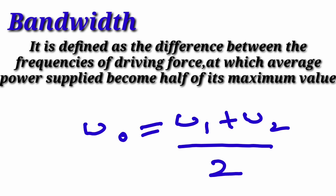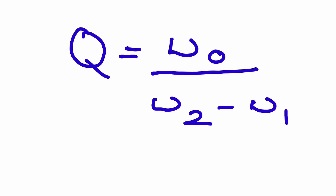Bandwidth is defined as the difference between the frequencies ω₂ − ω₁ at which average power supplied becomes half of its maximum value. There is also an expression showing the relationship between resonant frequency ω₀ and bandwidth frequencies ω₁ and ω₂ — useful when bandwidth frequencies are given and you need to find resonant frequency. The relationship between bandwidth and quality factor is: Q = ω₀ / (ω₂ − ω₁), meaning quality factor equals resonant frequency divided by bandwidth. So quality factor and bandwidth are inversely related to each other.